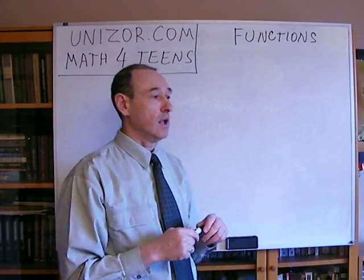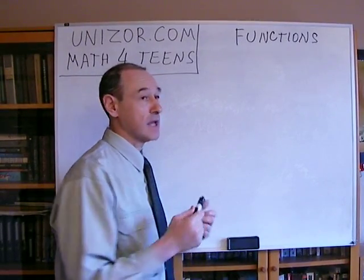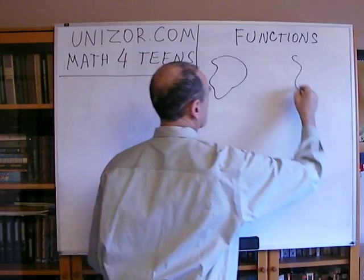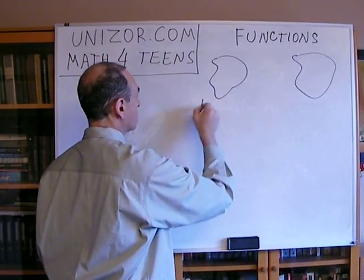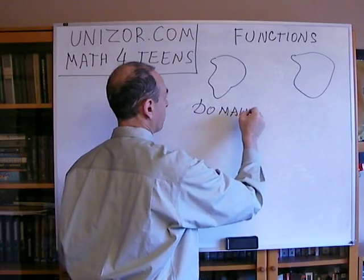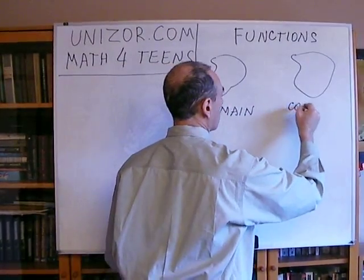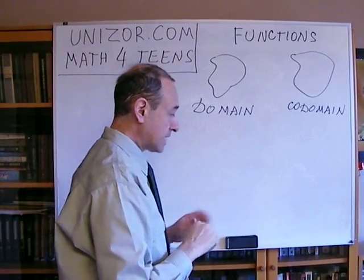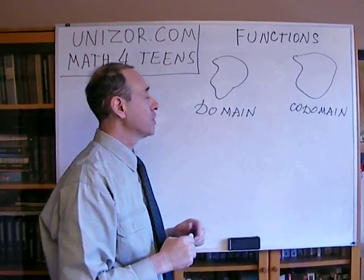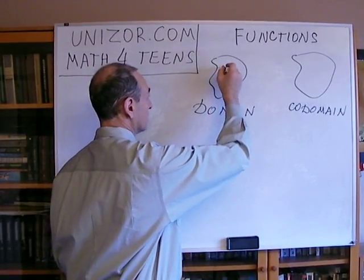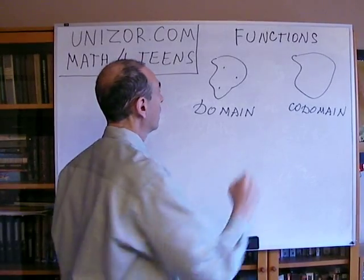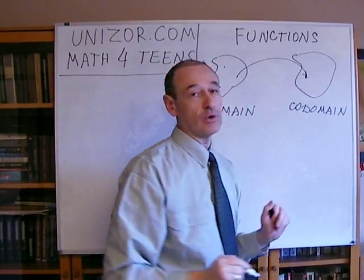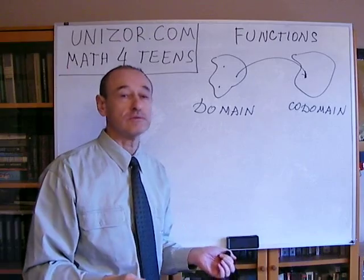To be a little bit more precise, let's imagine that you have two sets — absolutely abstract sets. We will call this one the domain, and this one we will call the codomain. Let's imagine that you have a certain rule which, given any element from the domain set, allows you to come to a certain element of the codomain set. Basically, this is the definition of a function — a functional dependency.